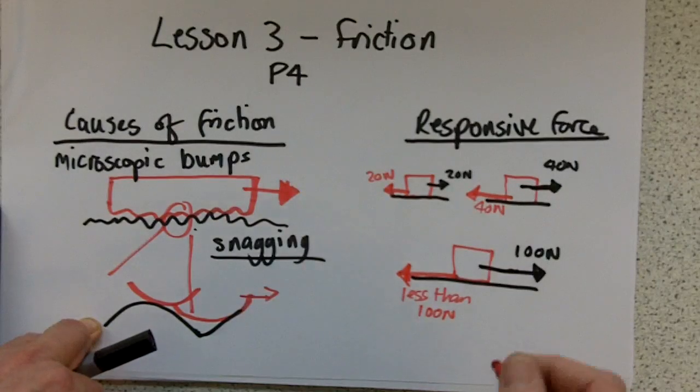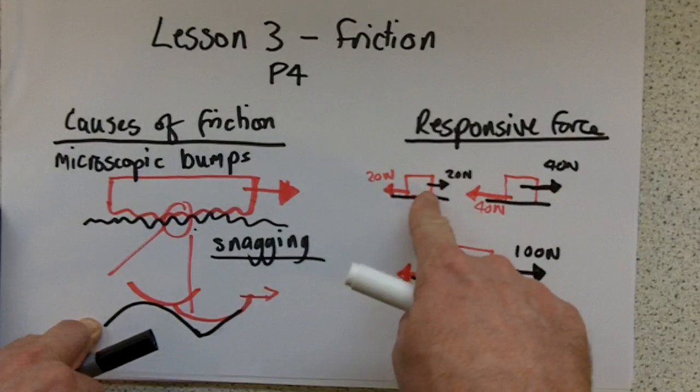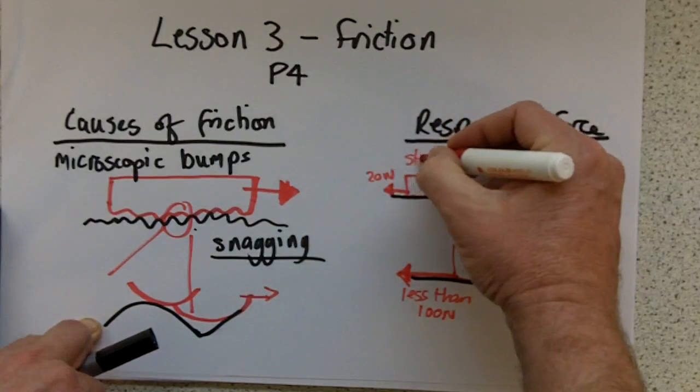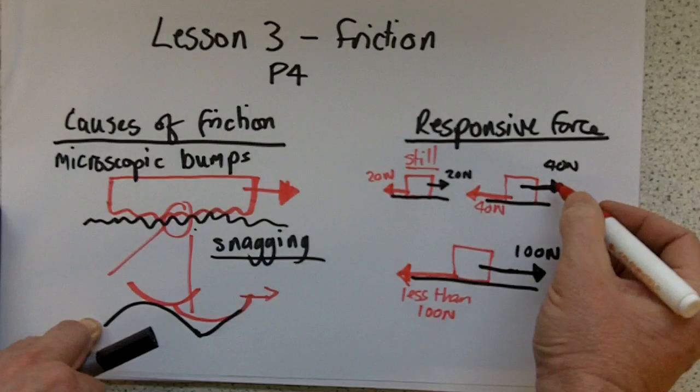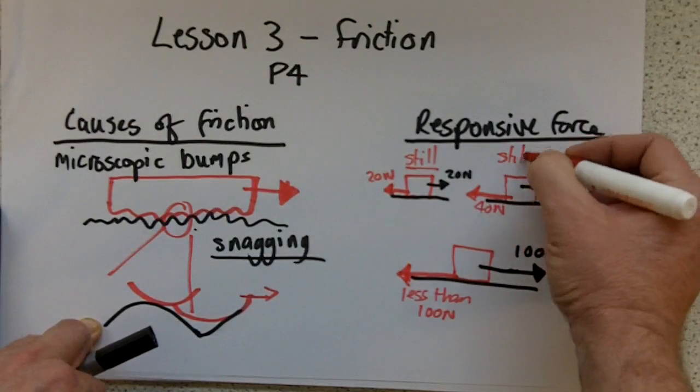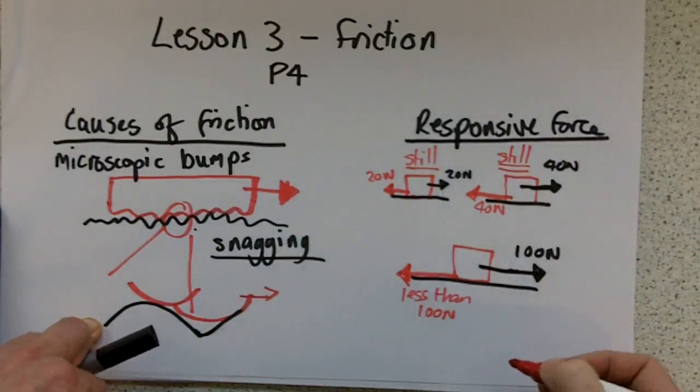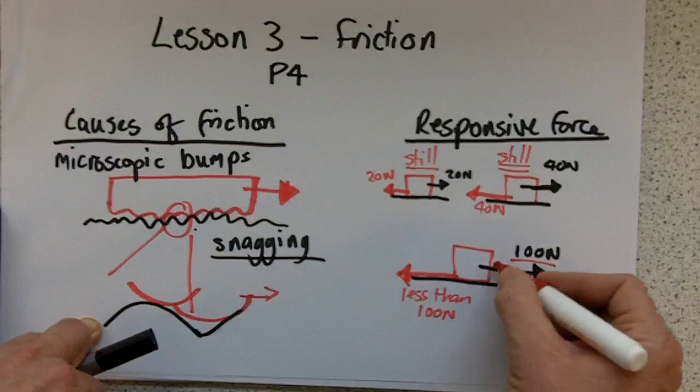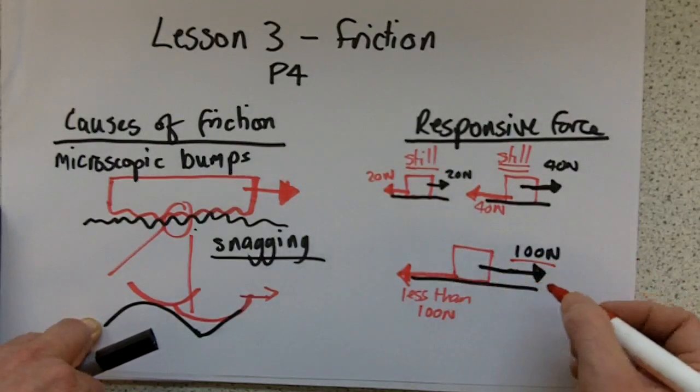So just to recap, friction force will be matching, and that still won't be moving, still or stationary. So I increase my force, but that's still not big enough to overcome the friction force. So it's stationary again. It's only when I apply a force that's big enough to overcome the maximum force that the object starts to move.